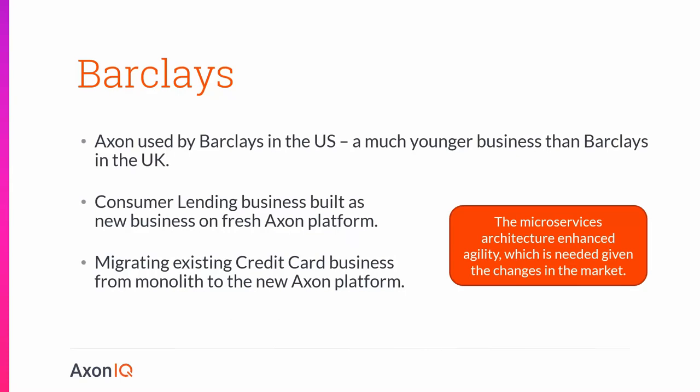The second case is Barclays. Axon is used by Barclays in the US — you may know Barclays as a UK bank, but their US branch is a lot younger. They started out with Axon by building a new business initiative — consumer lending — on Axon. At that point they were already doing credit card business, but that was not on Axon. After consumer lending, they started migrating their existing credit card business from their monoliths to the new Axon platform — really a case about microservices and increased agility, which is very much needed in that market.